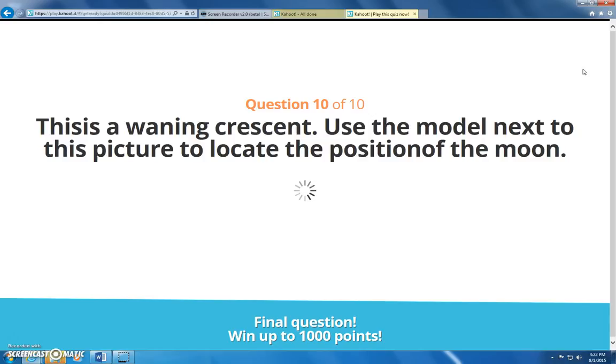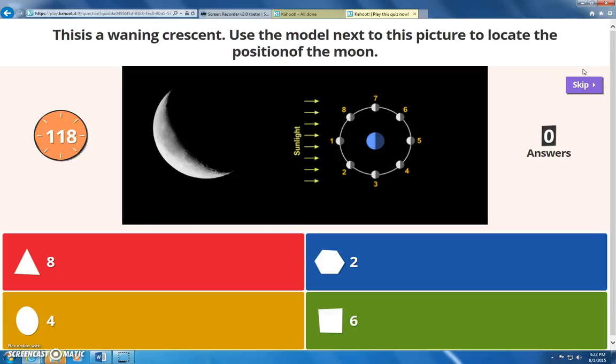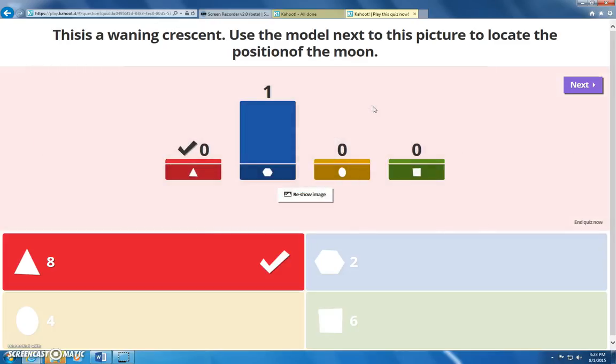Alright, we're on our last question. This is a waning crescent. Use the model next to this picture to locate the position of the moon in respect to earth. So, if you're standing on earth right here, which position of the moon, 7, 8, 1, 2, 3, 4, 5, 6, or 7, do you think that you would see a waning crescent? So, actually, number 2 is right after a new moon. And so, instead of getting smaller, which is what waning means, it would actually be getting bigger. So, you're right, it would be a crescent, but it would be getting bigger, so it's not waning. It's a waxing crescent.